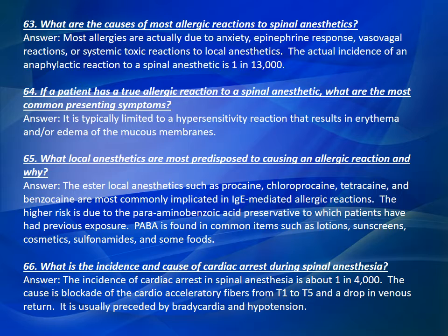Question 66: What is the incidence and cause of cardiac arrest during spinal anesthesia? The incidence of cardiac arrest in spinal anesthesia is about 1 in 4,000. The cause is blockade of the cardiac acceleratory fibers from T1 to T5 and the drop in venous return. It is usually preceded by bradycardia and hypotension.